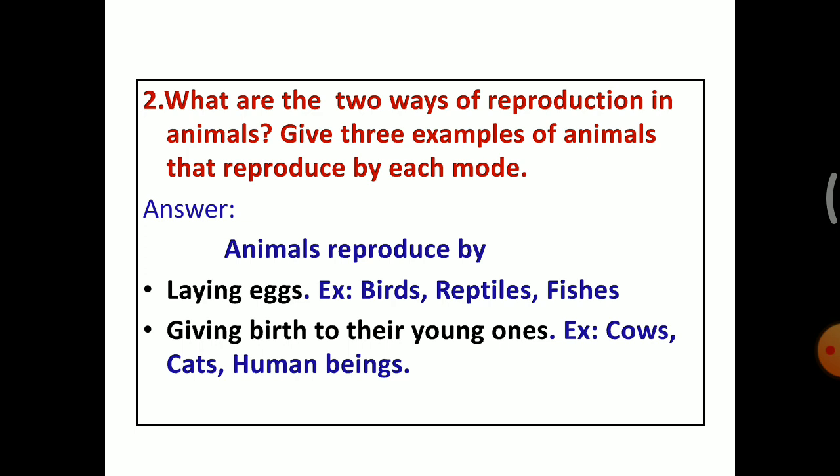Giving birth to their young ones are cow, cat, human beings. There are two ways of reproduction in animals. One is laying eggs, the another one is giving birth to their young ones. The example for laying eggs is the birds laying eggs, the reptiles lay eggs, fishes also lay eggs. Cow, cat, human beings are reproduced their own kind.